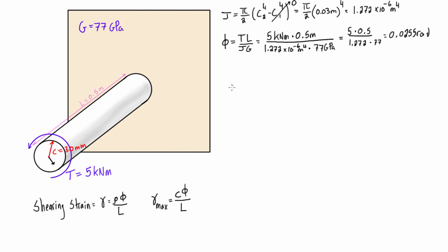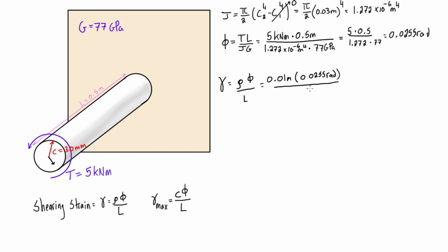If we want to find the shearing strain at a distance of 10 millimeters from the center — one-third of the way out to the edge — the shearing strain equals the radial distance times the angle of twist divided by the length. So we get 0.01 meters times 0.0255 radians, divided by 0.5 meters, giving a shearing strain of 0.0051 radians.